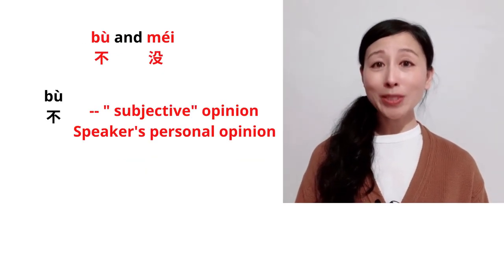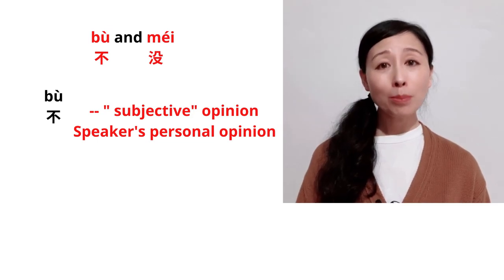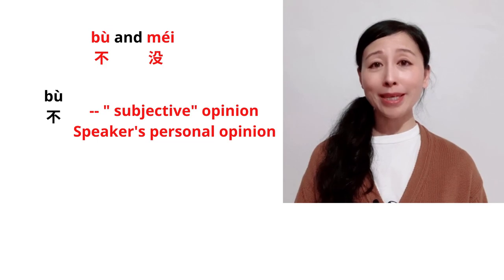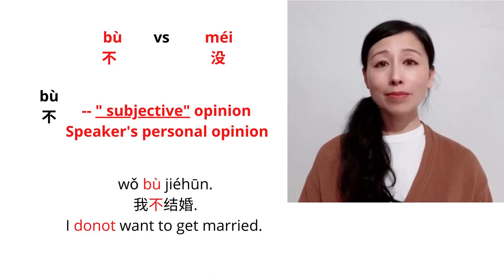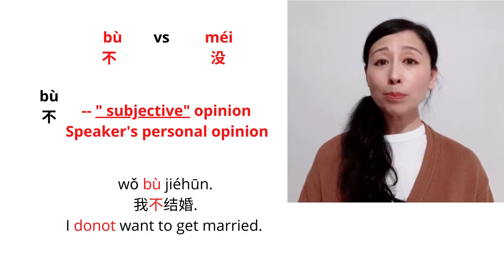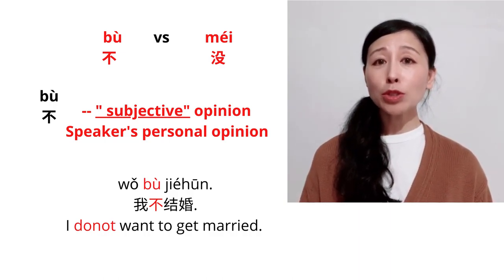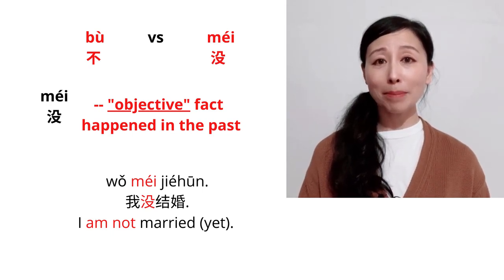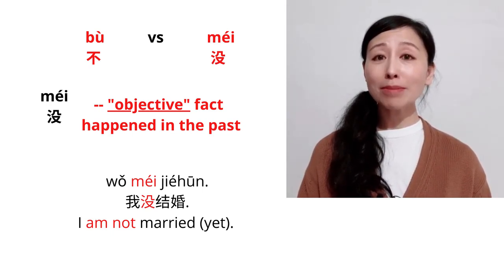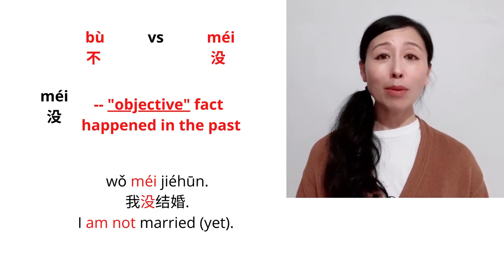After we learn the usage of bu and mei, let's look at what's the differences between bu and mei. Bu is to express the subjective opinion, just like speaker's personal opinions. For example, I don't want to get married. Wǒ bù jiéhūn. So that means the speaker doesn't want to get married. But mei is to express the objective fact that happened in the past. For example, I'm not married. Wǒ méi jiéhūn. That means I'm not married yet, but maybe I will marry in the future.